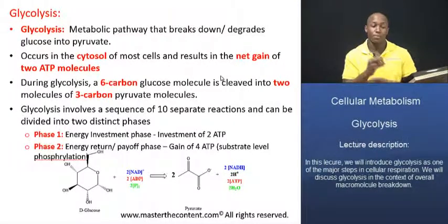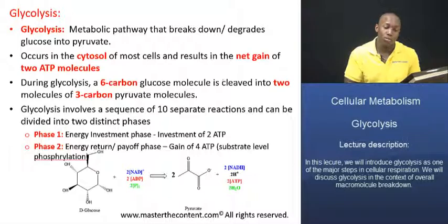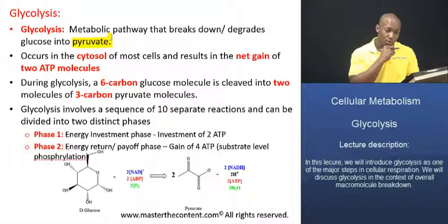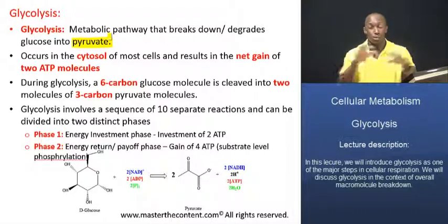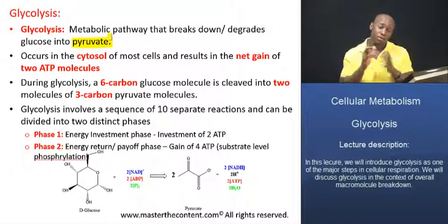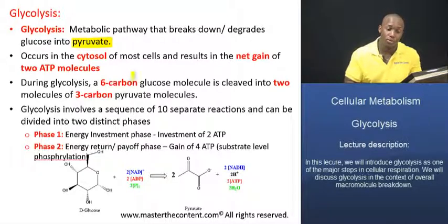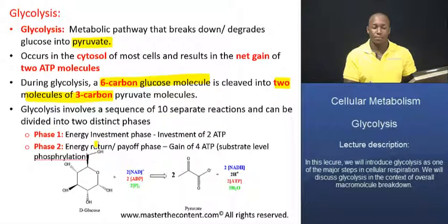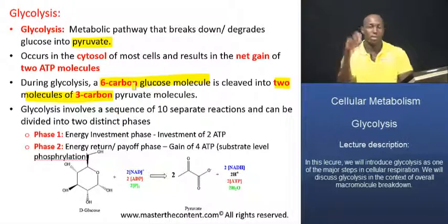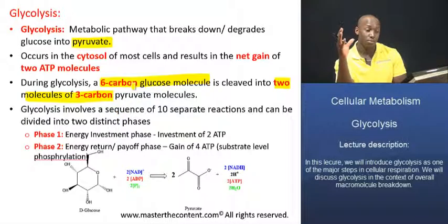Your career, our passion. Let's delve into what we came to do today: glycolysis. It's a metabolic pathway that breaks down or degrades glucose into pyruvate. In glycolysis, you have a 6-carbon sugar — we're going to be talking about glucose the entire time. Glucose is a 6-carbon sugar, and in the process of glycolysis, that 6-carbon glucose molecule is broken down into 2 molecules of a 3-carbon pyruvate.